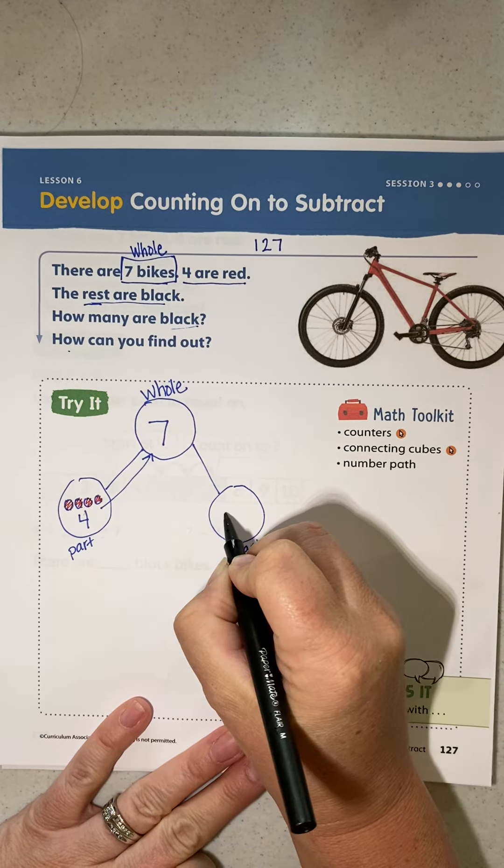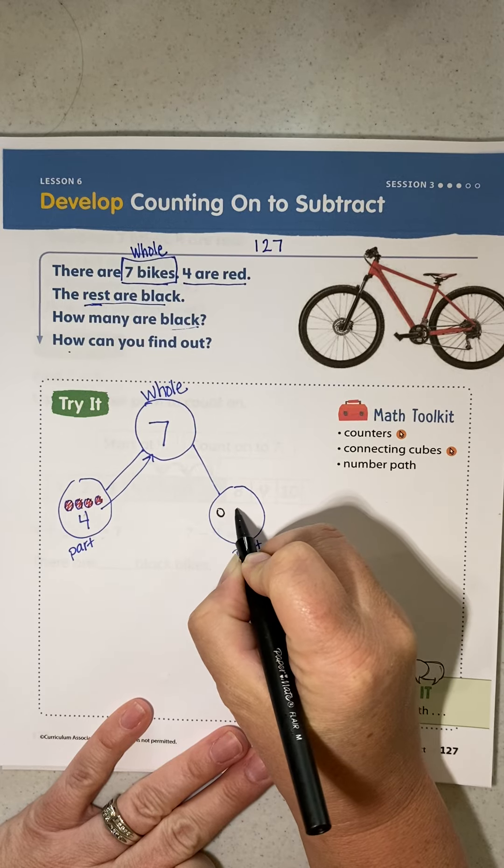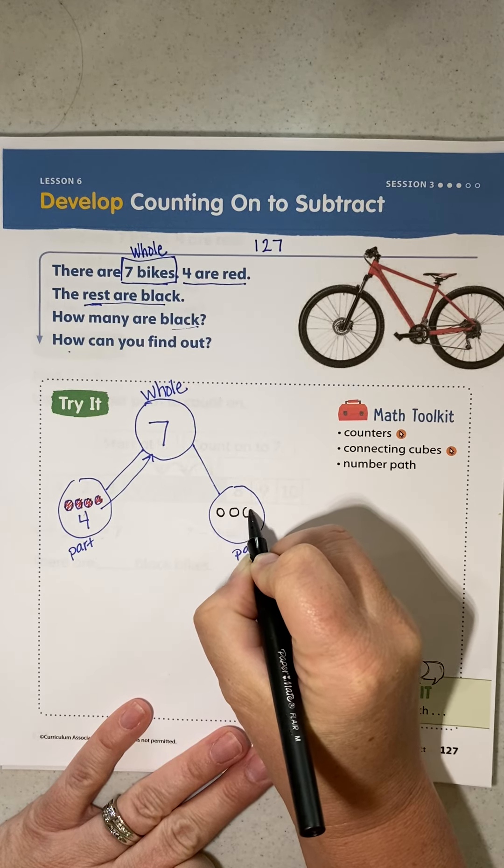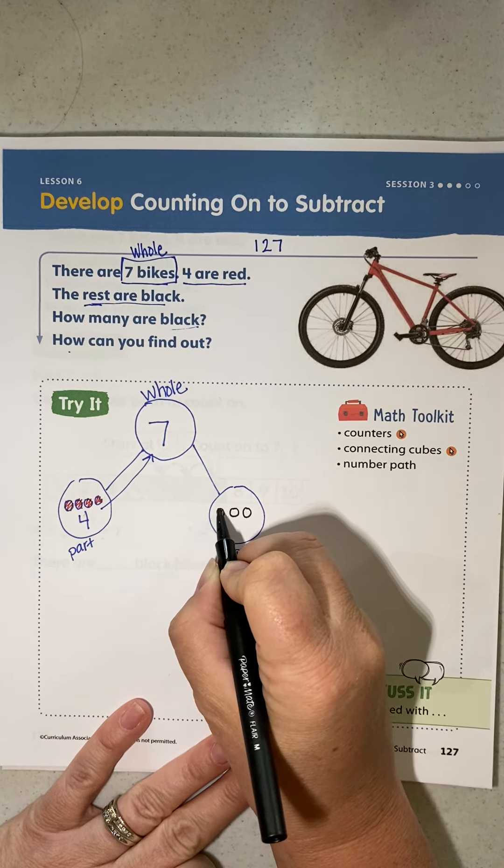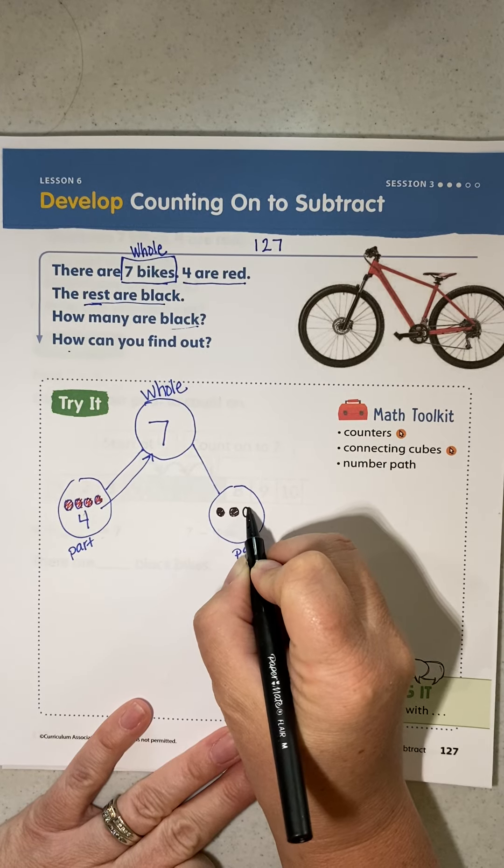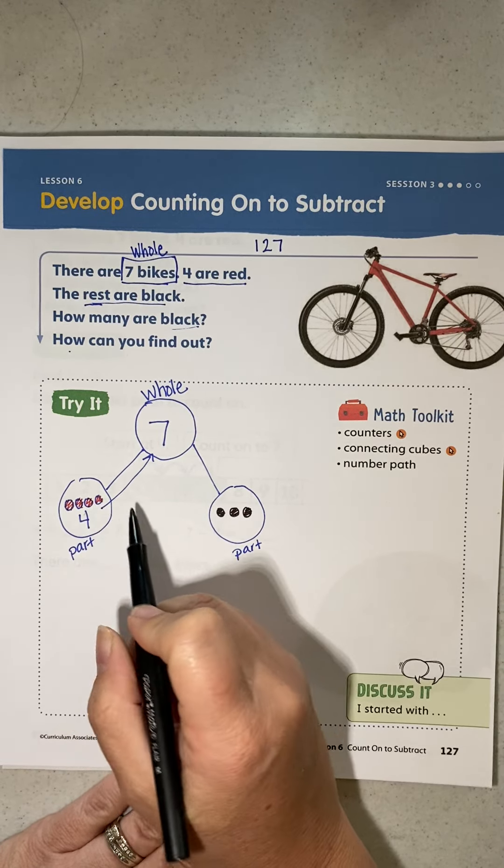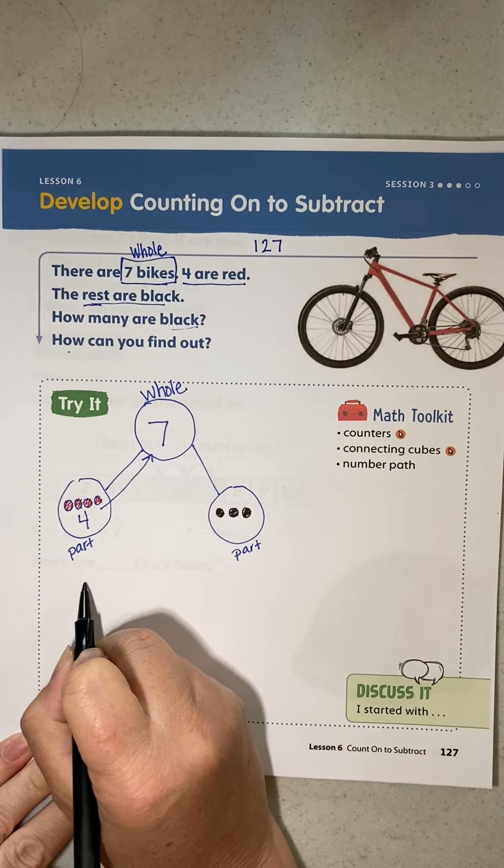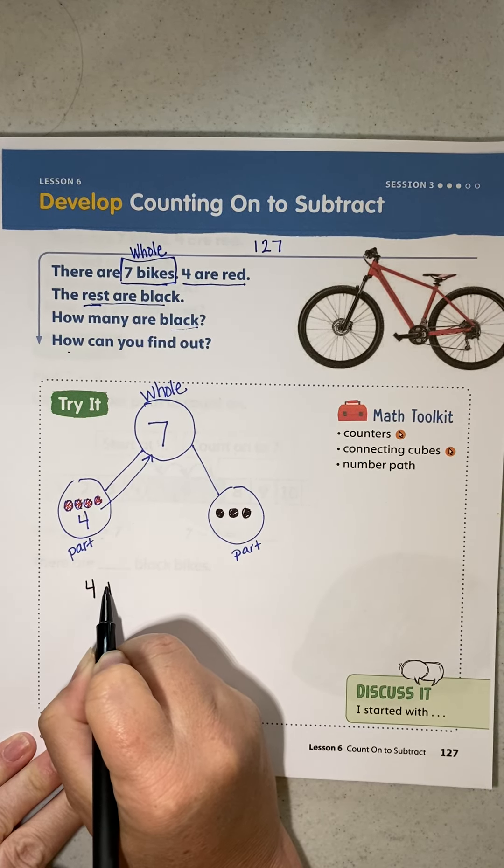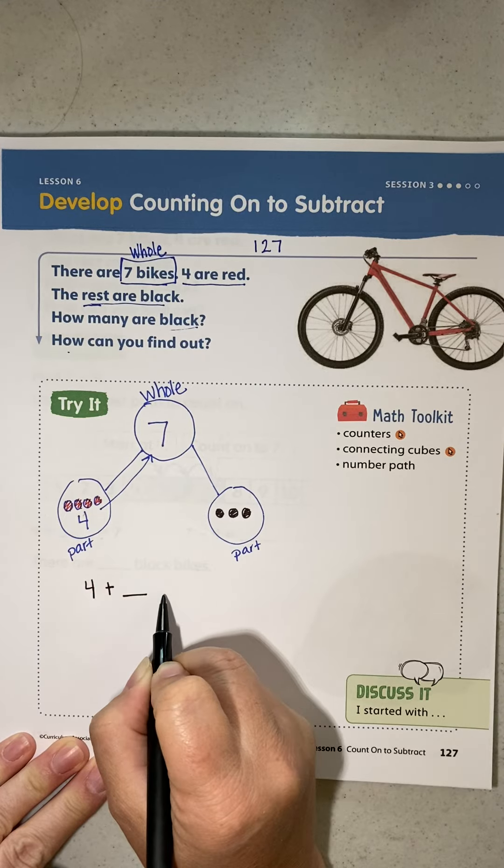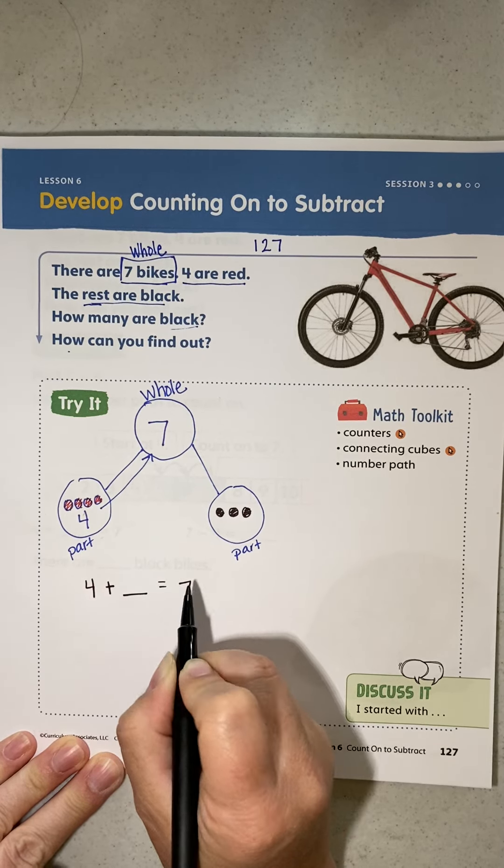Four, five, six, seven. So the part we did not know, we know has to be three. I could write four plus blank equals seven.